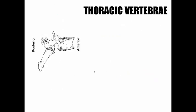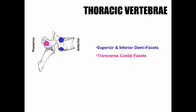For thoracic vertebra, looking at the sagittal view, you have superior and inferior demi-facets — very small indentations on the superior and inferior parts of the vertebral body. You also have transverse costal facets on both transverse processes. 'Costal' means ribs, so the ribs come back and engage with the thoracic vertebra on the transverse process as well. You really need to look at a full skeleton to see this interaction. The key identifier of a thoracic vertebra is the really long, angled spinous process.